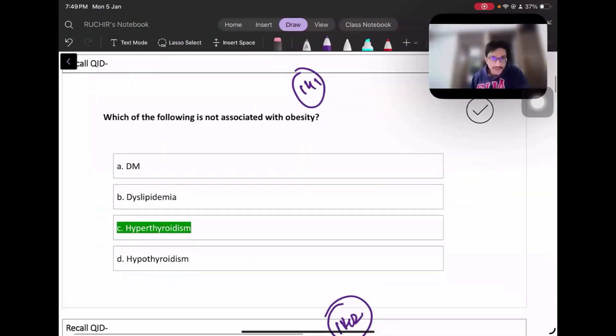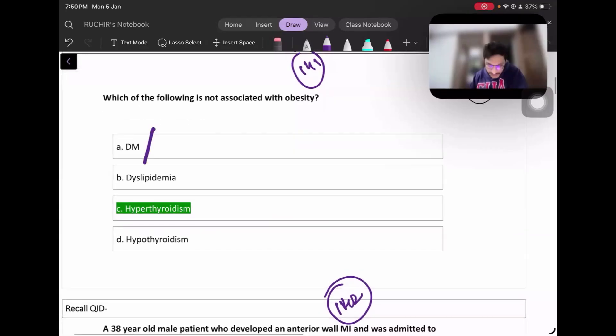Let's start with a question about which of the following is not associated with obesity. Let's quickly discuss and complete the recall questions. Amongst the options, we have polycystic ovarian syndrome. Hypothyroidism is not associated with obesity - very simple, straightforward question.